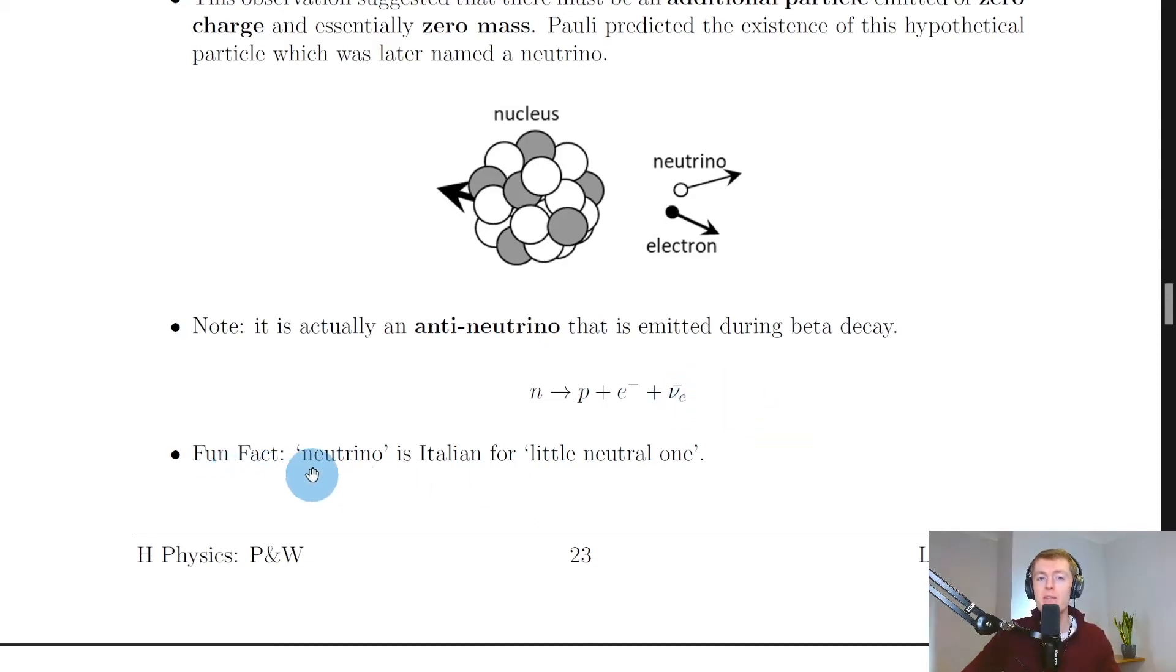We could now say that the reaction looks like this: we have the neutron converting into a proton plus the electron plus the electron anti-neutrino. A fun fact is that neutrino is Italian for 'little neutral one' because a neutrino has zero charge.